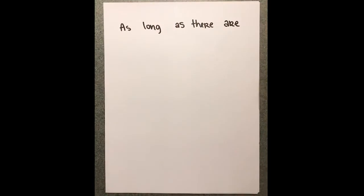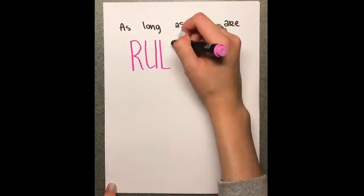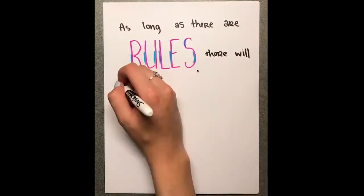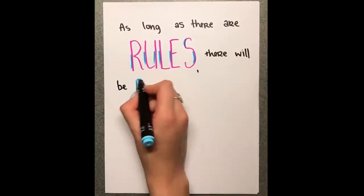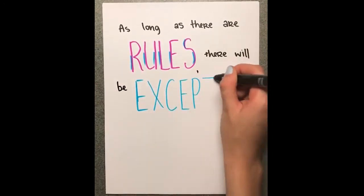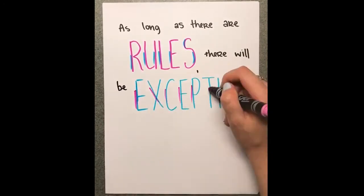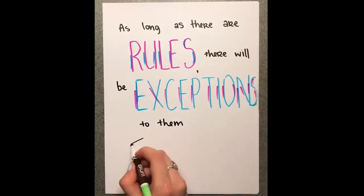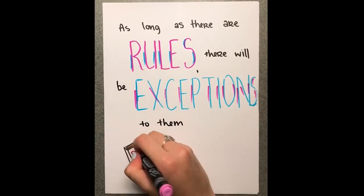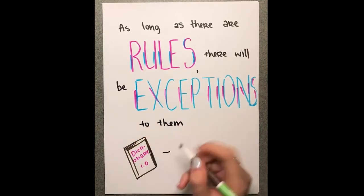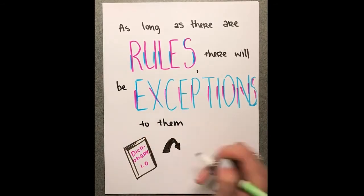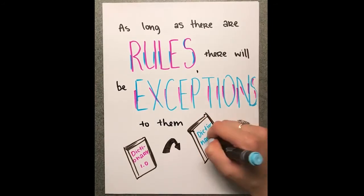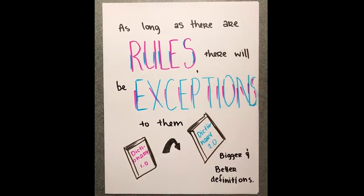As long as there are rules, there will always be exceptions to them. As long as we try to define what an organism is, there will always be things that we can still consider organisms that defy the rules we set for them. The best we can do is just to keep finding the exceptions to our rules, and trying to include them in our ever-evolving definitions.